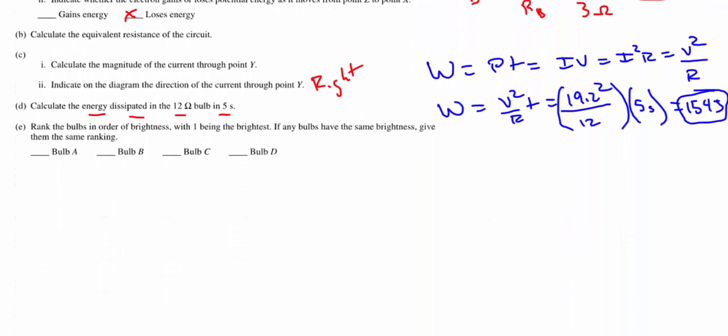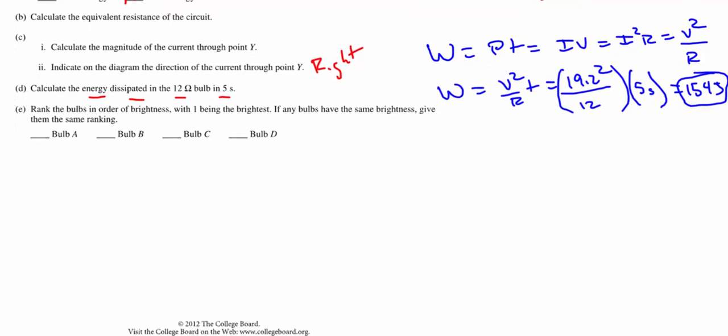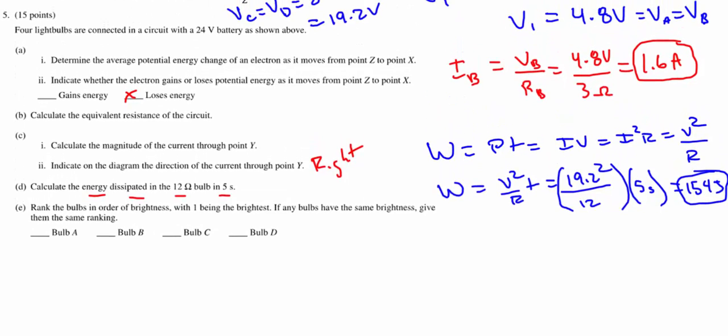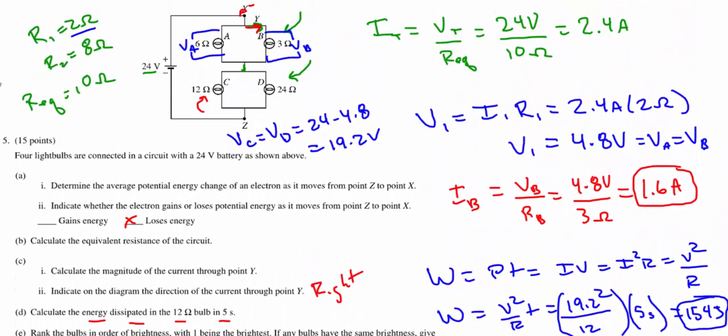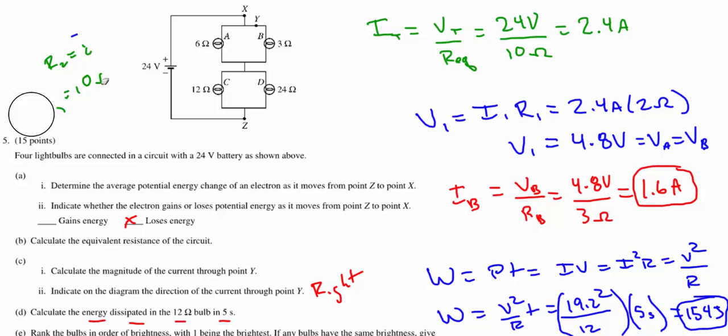And part E, we're going to rank the bulbs with one being the brightest and four being the weakest. And if they have the same ranking, then they're going to equal the same number. So which ones will be the brightest? Well, the best way of thinking about it is which ones have the most current flowing through them. And resistance comes into play here, but for this it should be pretty straightforward. I'm going to erase a lot of this stuff up here so we can kind of see what's going on. We've got total current up here, which was that 2.4 amps. That current then diverts and then diverts again.